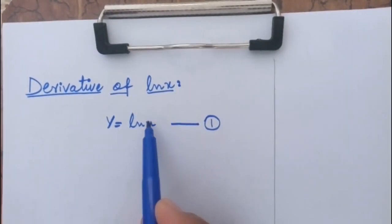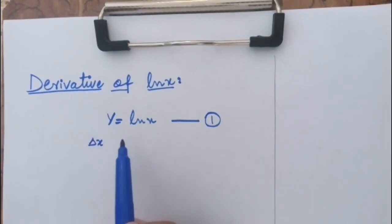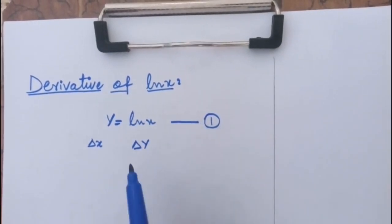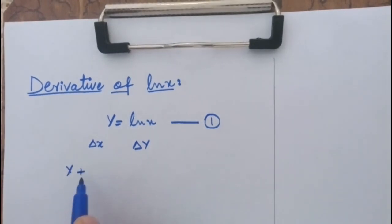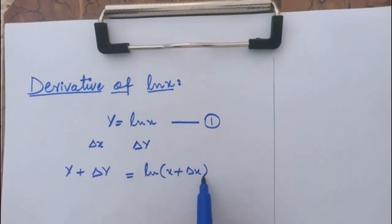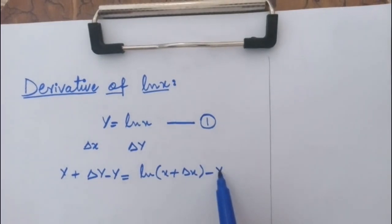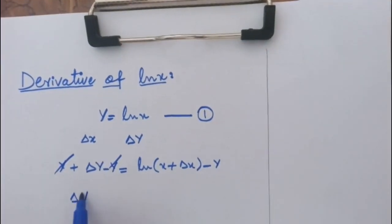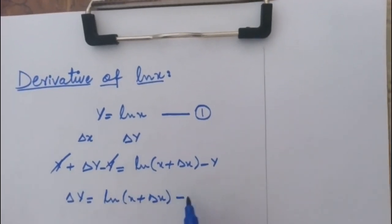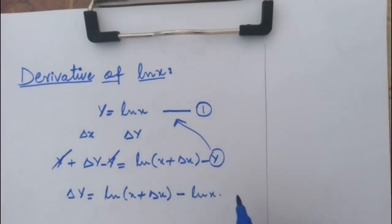Now if we do some increment in x, let's say del x, then in this case we do some increment in y which is del y. Then equation 1 becomes: y plus del y is equal to ln(x plus del x). Now subtracting y from both sides, we get del y is equal to ln(x plus del x) minus y, and from equation 1, y is equal to ln x.